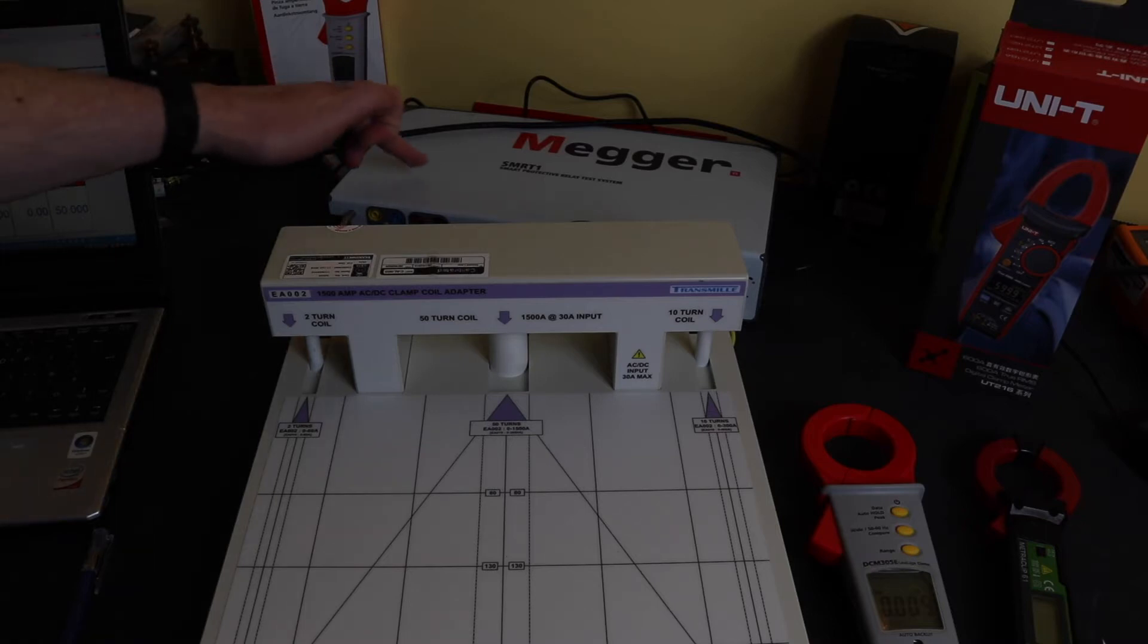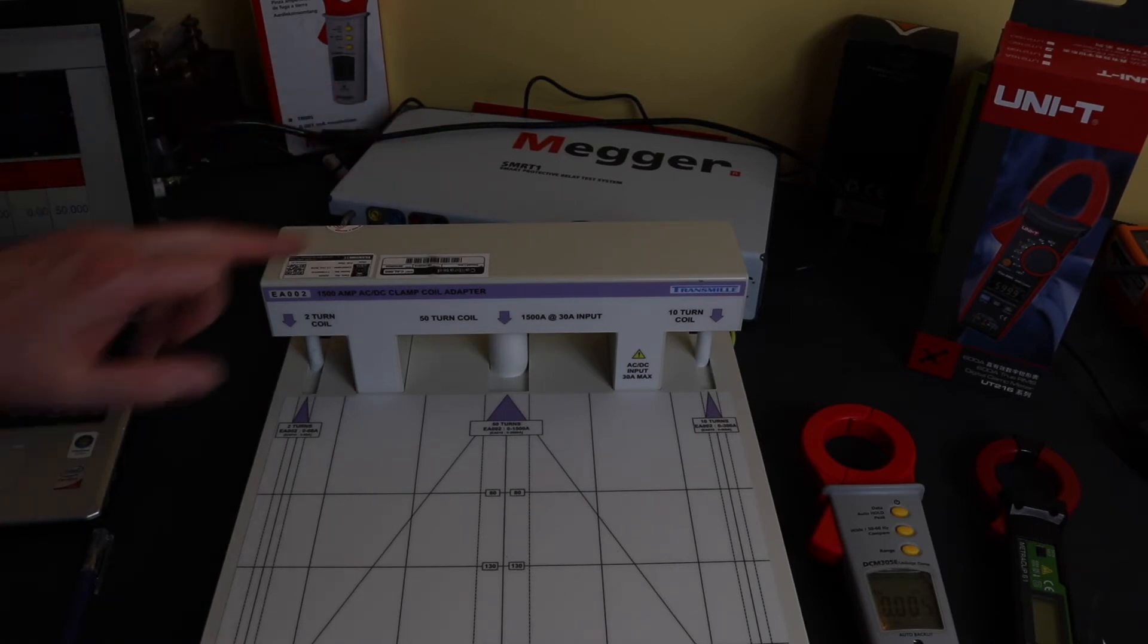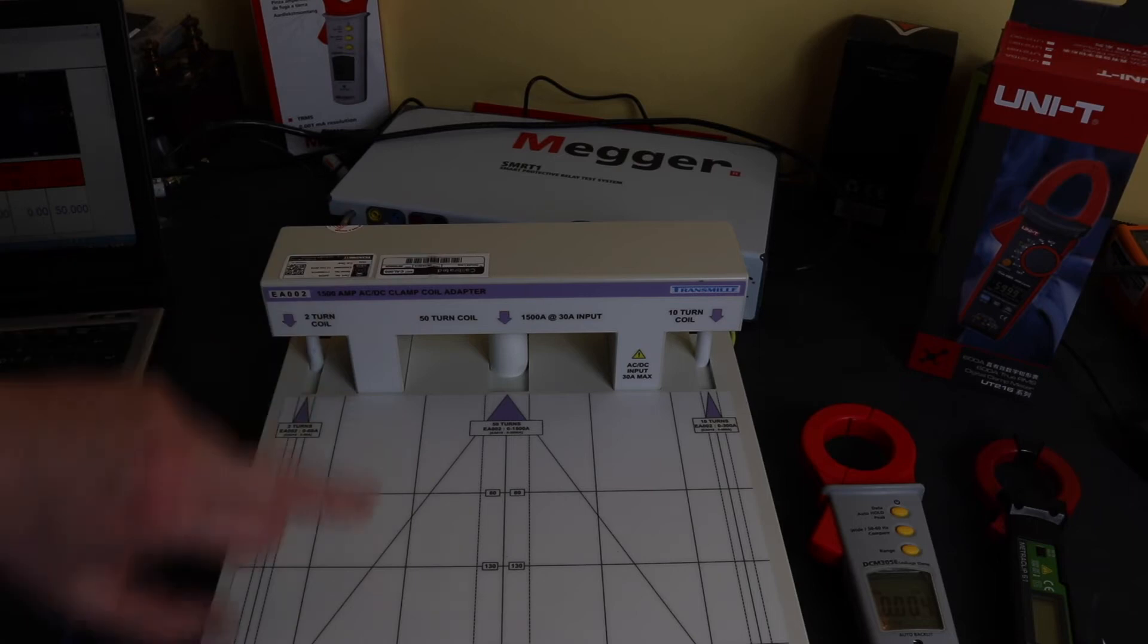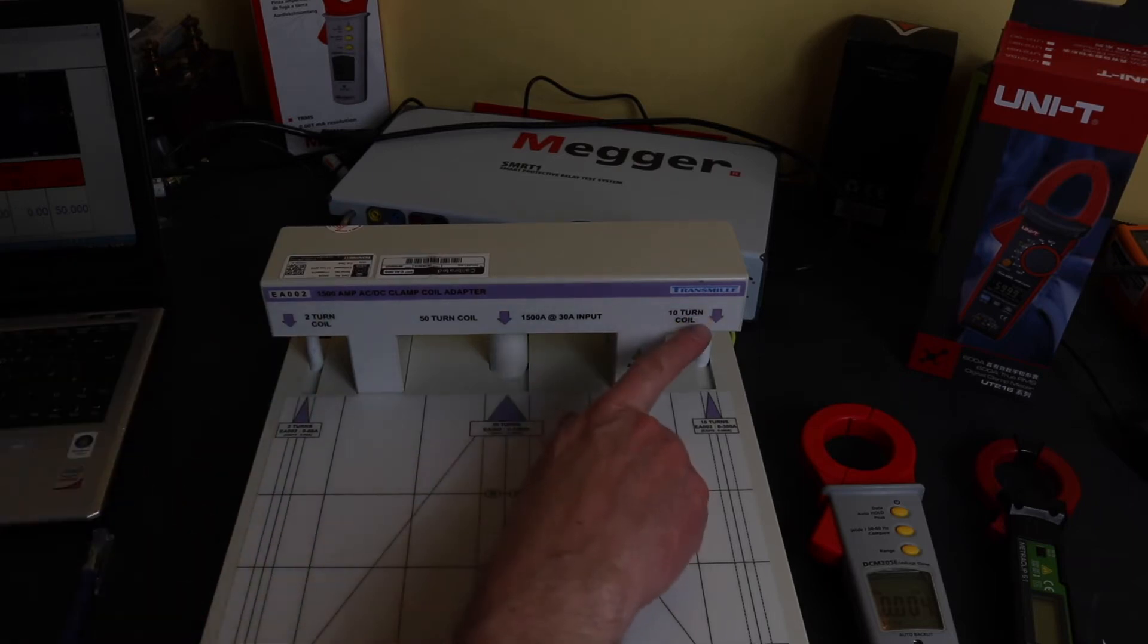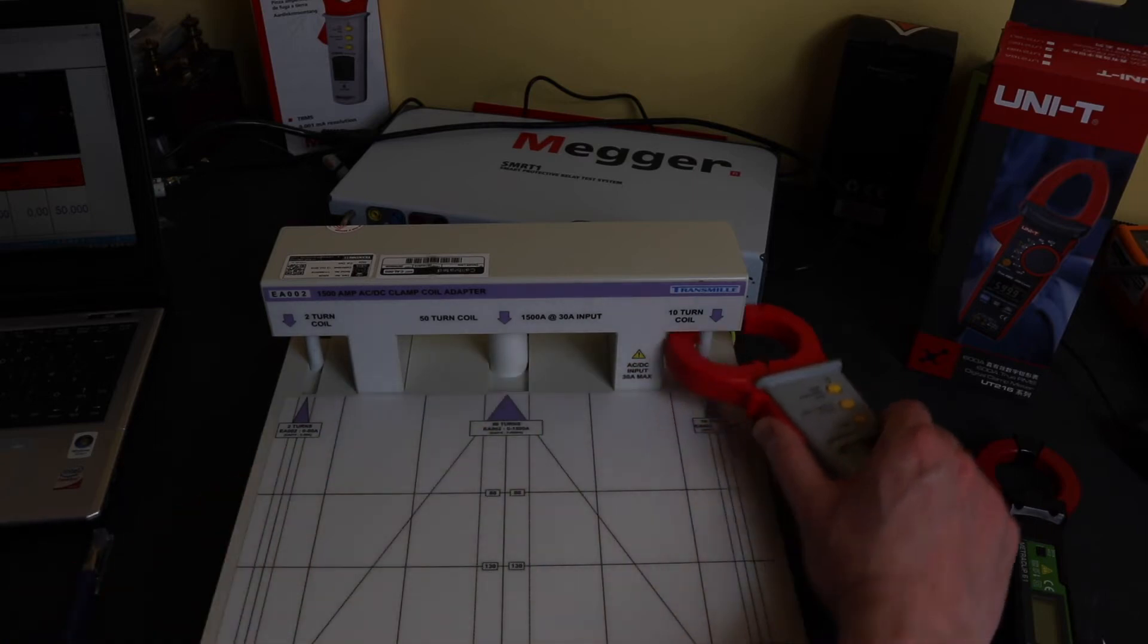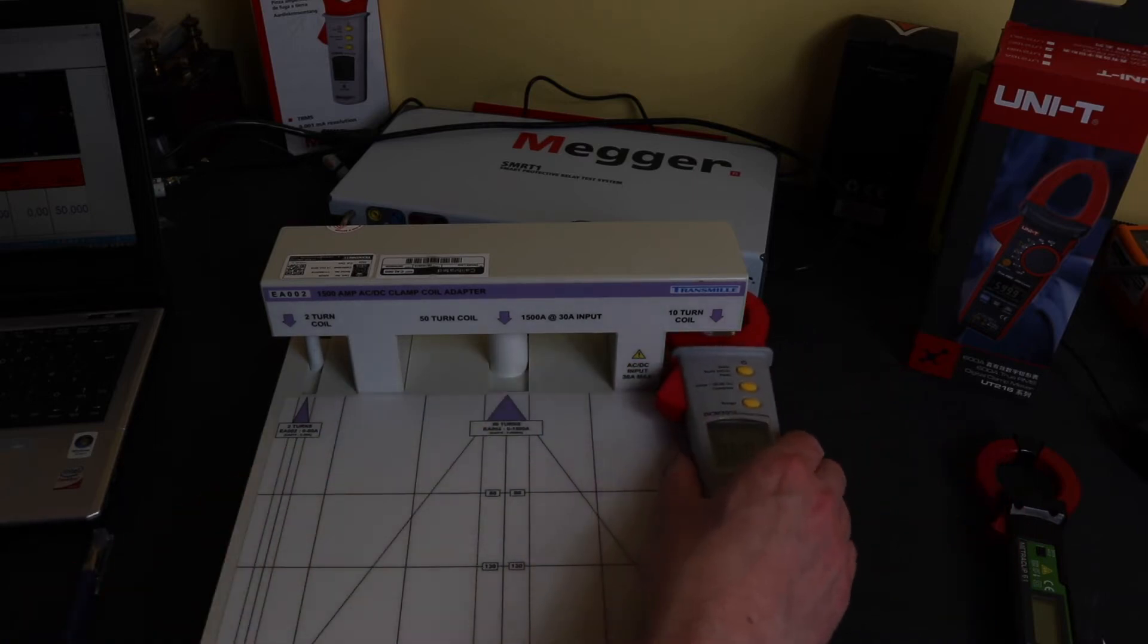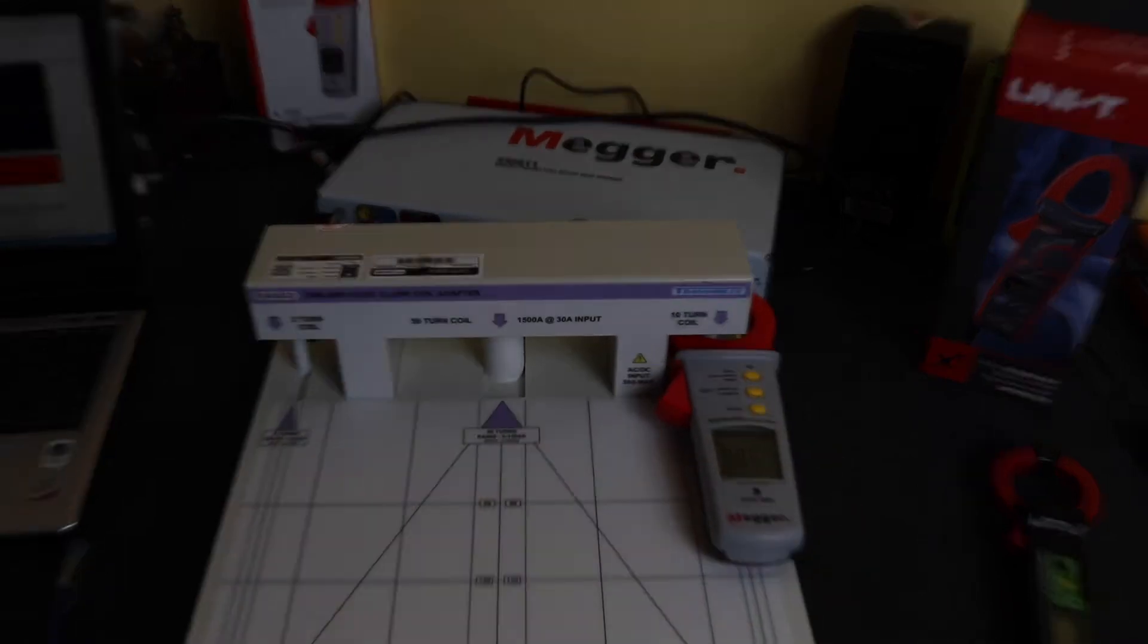So to do the tests I've got one Megger SMRT injection unit at the back there that's going to be putting current into the current clamp table you see in the front there. I'm going to be using the 10 turn coil initially so we'll take a look at Megger and set him up and I'll see if I can zoom in onto the screen a little bit better.